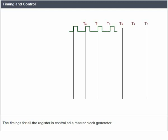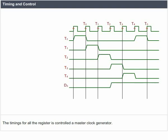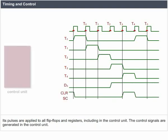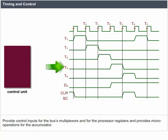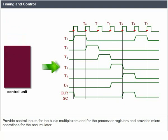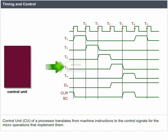The timings for all registers are controlled by a master clock generator. Its pulses are applied to all flip-flops and registers, including those in the control unit. The control signals are generated in the control unit, which provides control inputs for the buses, multiplexers, and processor registers, and provides micro-operations for the accumulator. The control unit (CU) of a processor translates from machine instructions to the control signals for the micro-operations that implement them.